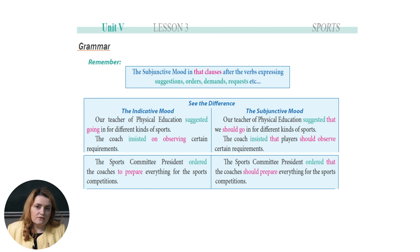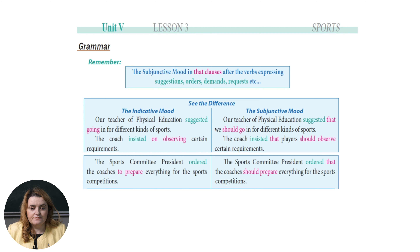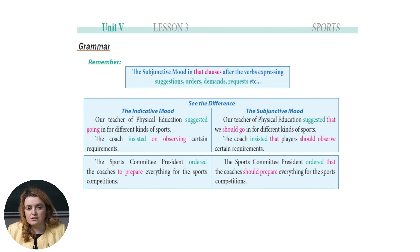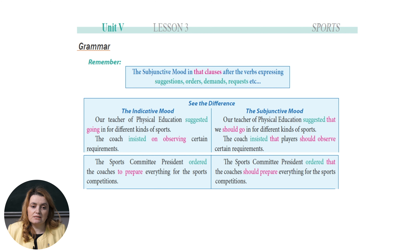Let's have a look at the chart and see the difference. The indicative mood — here are two examples. Our teacher, physical education, suggested going in for different kinds of sports. The coach insisted on observing certain requirements. Remember, that was the indicative mood.